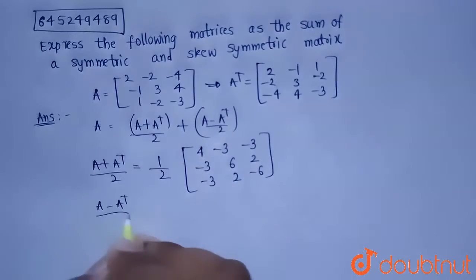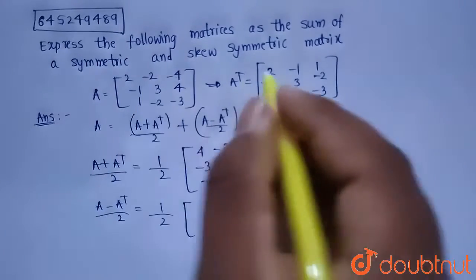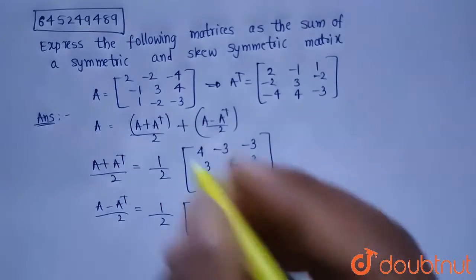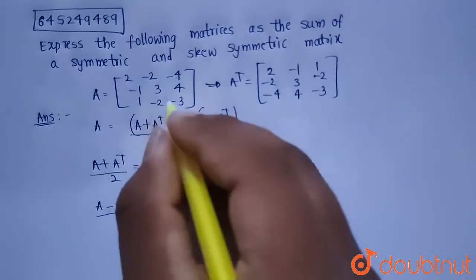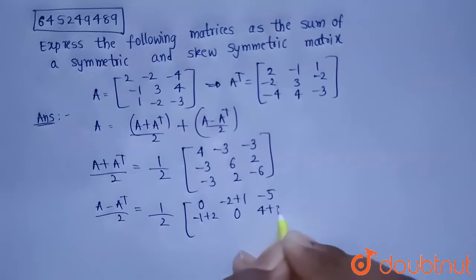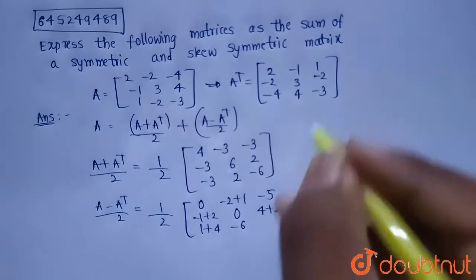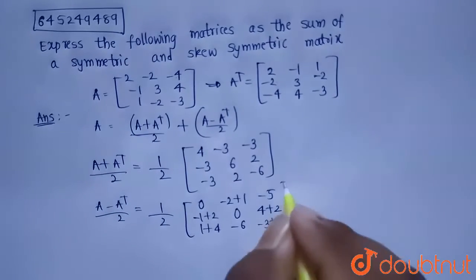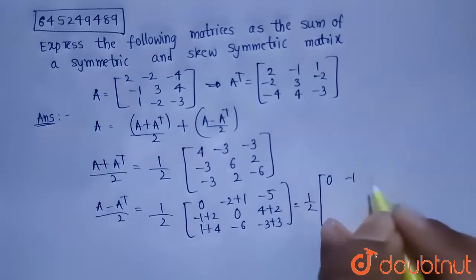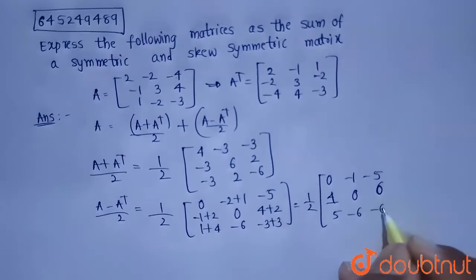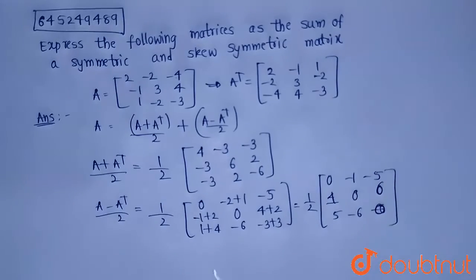Now let's find the skew-symmetric part, which is (A − Aᵀ) / 2. Computing A − Aᵀ gives: [0, −1, −5; 1, 0, 6; 5, −6, 0]. So the skew-symmetric part is 1/2 times [0, −1, −5; 1, 0, 6; 5, −6, 0]. This is the skew-symmetric part of matrix A.